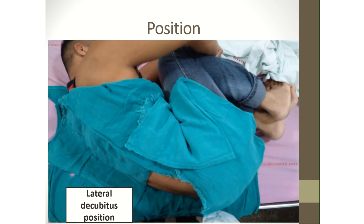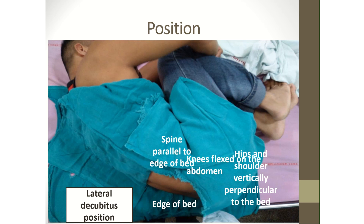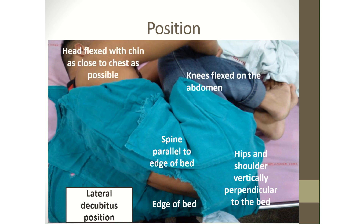To perform a lumbar puncture, the position of the patient is very important. The patient has to be placed in the lateral decubitus position at the edge of the bed with the spine parallel to the edge of the bed, hips and shoulders vertically perpendicular to the bed. The patient has to attain a flexed posture with the knees flexed on the abdomen and the head flexed with the chin as close to the chest as possible.